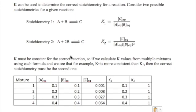Since K is a constant, its values should stay the same regardless of how we prepare our reactions. So for this example, we will have two different ways of calculating our K: K1 for stoichiometry 1 and K2 for stoichiometry 2. You see here that the B is squared because of its coefficient of 2.